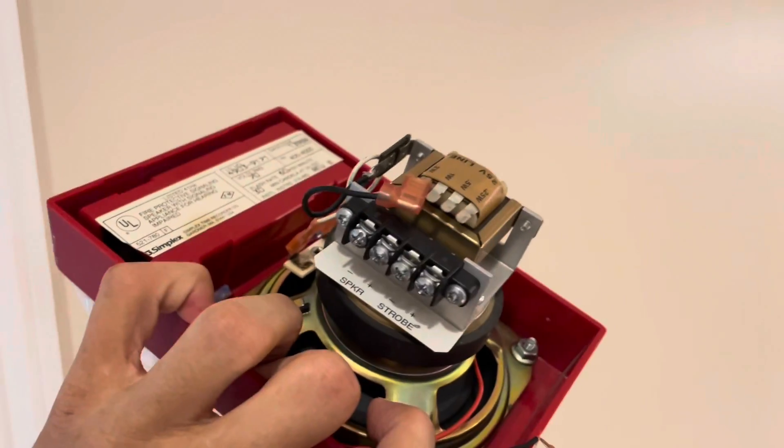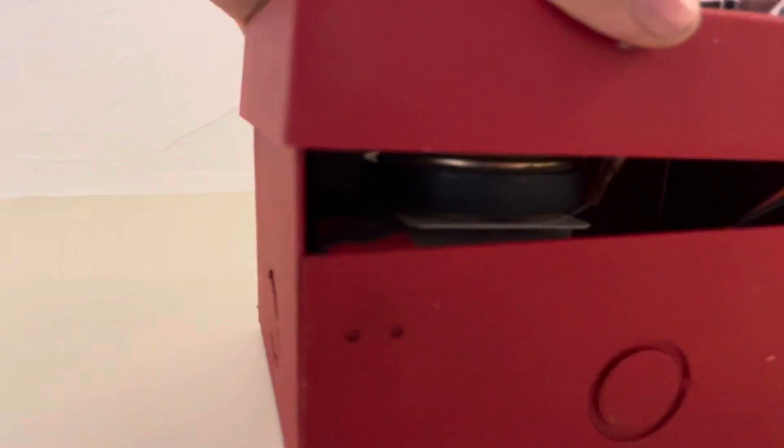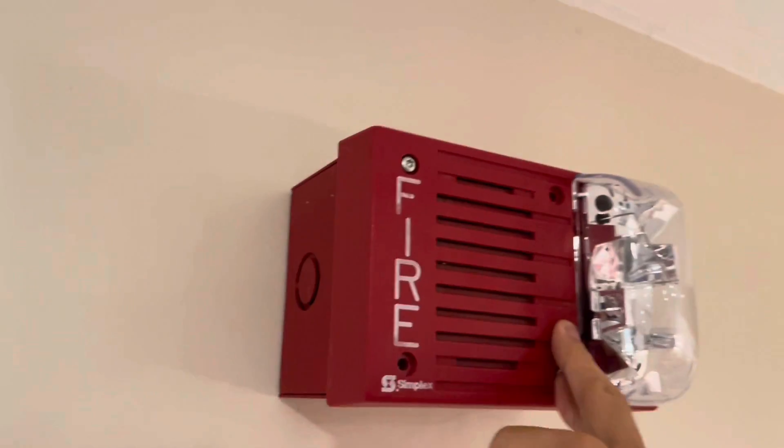And then this speaker was from a different device so I just have these strobe leads and this speaker but it's still the same thing. It'll work as intended. So once you're ready to put the device on the box you have to make sure you slide these tabs under the device and you just kind of push it on and then send in your screws.